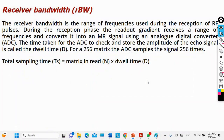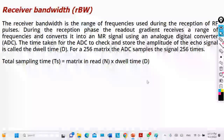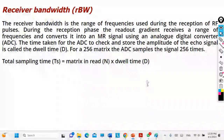Similarly, the coil that receives frequencies — the receiver — can be told to receive quickly or slowly. If the receiver captures information quickly, it can receive more information, meaning more frequencies from the image. So if I receive more frequencies it means I am receiving more information from many points in the image.